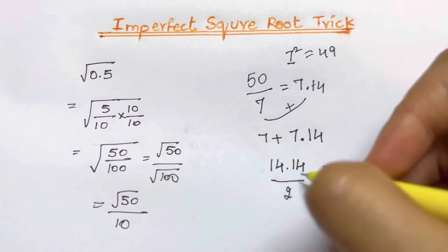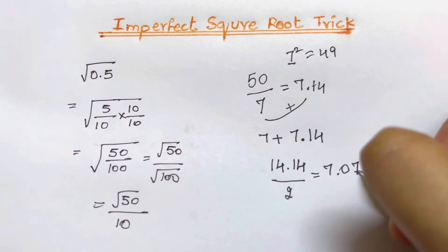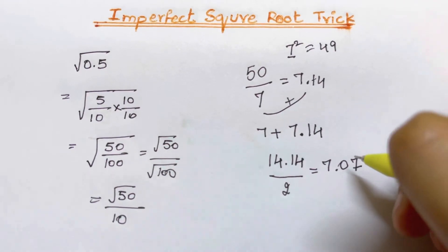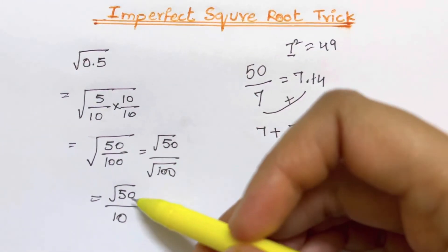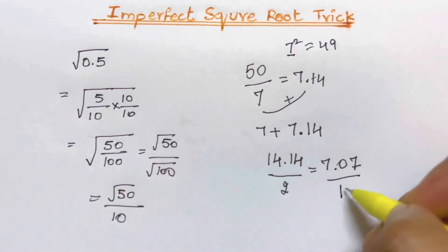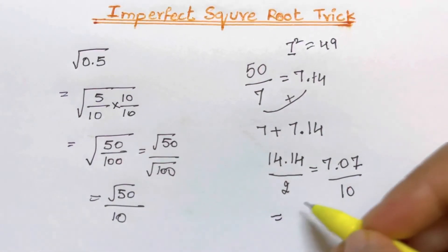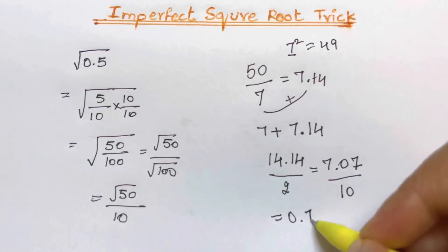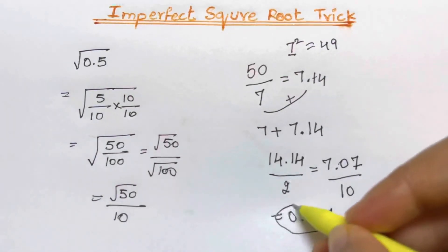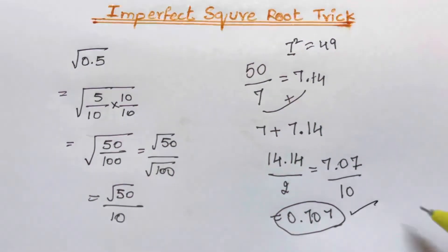2 times 7 is 14, so you have 7.07. Initially we had divided by 10, so we divide by 10 again — that gives 0.707. So square root of 0.5 is 0.707.